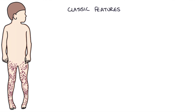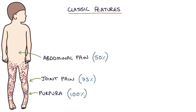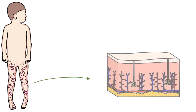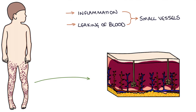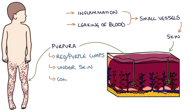The four classic features to remember are: purpura, which occurs in 100% of children; joint pain in 75%; abdominal pain in 50%; and kidney impairment in 50% of children. The rash is caused by inflammation and leaking of blood from small vessels under the skin, forming purpura — red-purple lumps under the skin that contain blood. These are non-blanching, meaning HSP is a cause of a non-blanching rash.